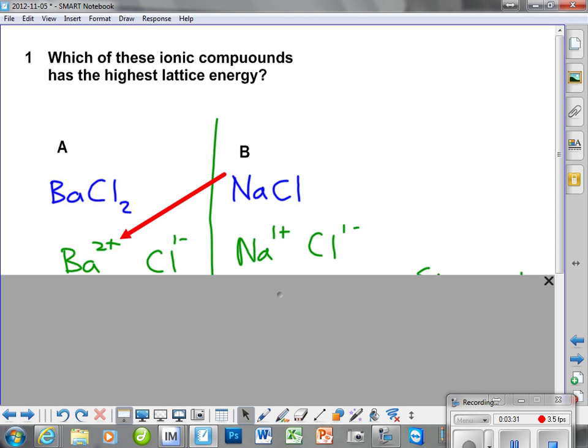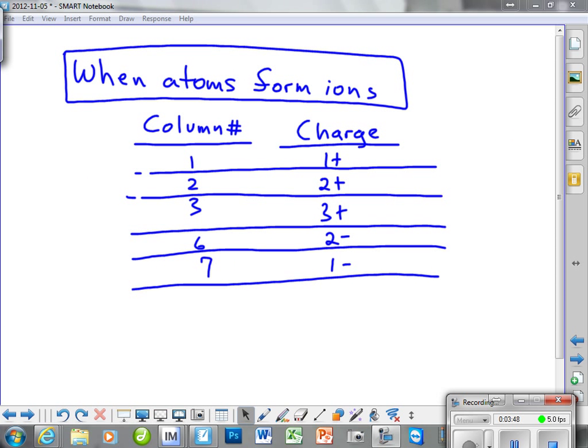Over here, we have barium at a plus two because he was in column two of the periodic chart. I'm going to change to a little summary thing that gives you that. Here's the summary of what's on that chart on your memorized ions. When atoms form ions, these are the charges that they get depending on their column. If you want to copy that down, stop the recording and copy that down.